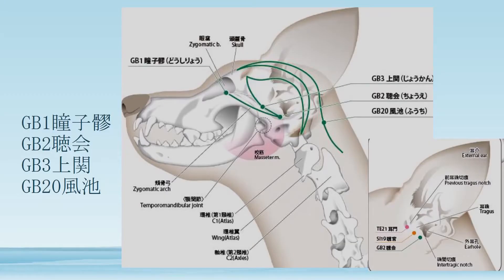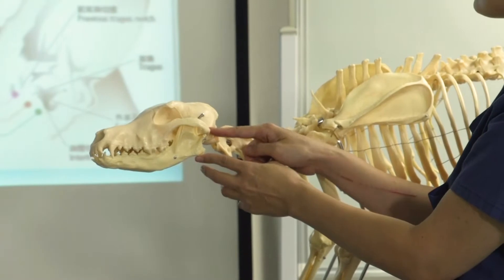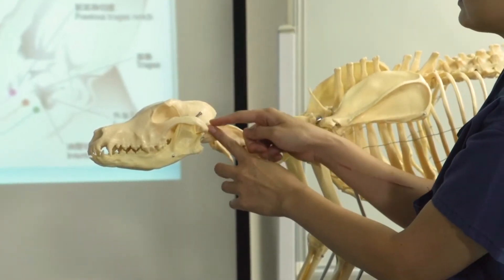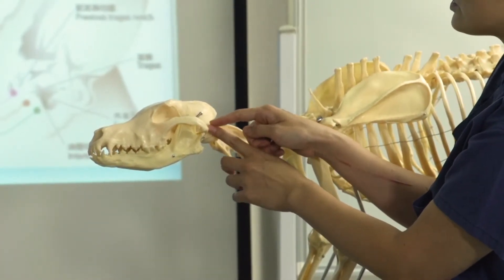GB2 is in front of the intertragic notch. In front of the ear there is a bump called the tragus, and underneath the tragus there is a notch. You locate GB2 in front of that notch.